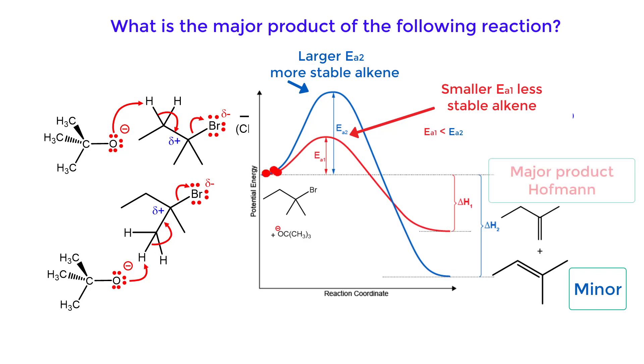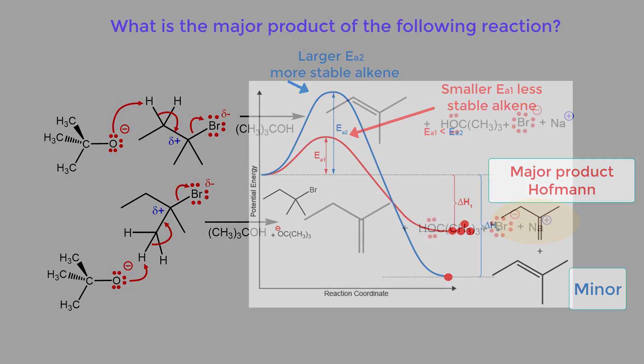Thus the major product of this reaction is the less stable alkene, 2-methyl-but-1-ene or the Hoffman product.